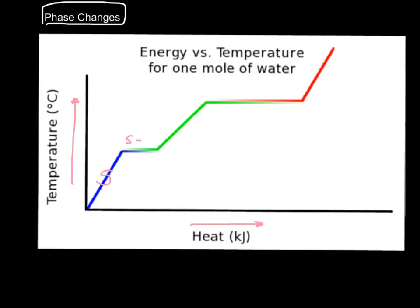This section represents a solid. This is where the solid turns into a liquid, this is liquid, liquid turning into vapor, and this is vapor. Note that these areas where the phase change occurs are plateaus. The temperature doesn't change while the state is changing. All the energy you put in goes towards changing the state, separating the particles, not increasing the temperature.